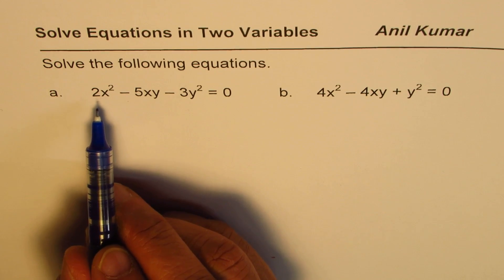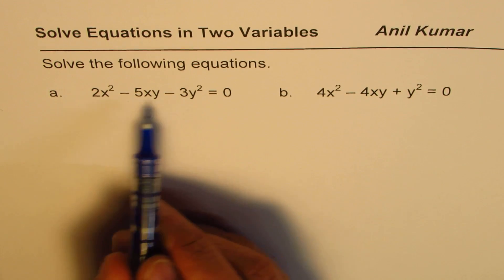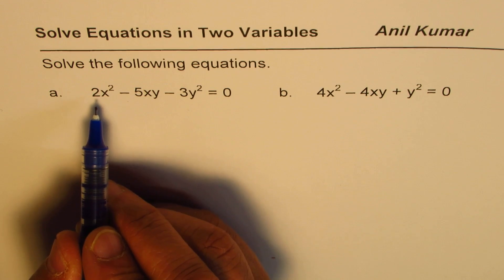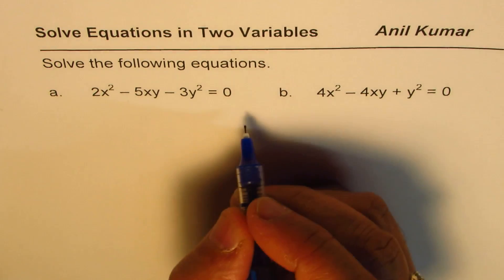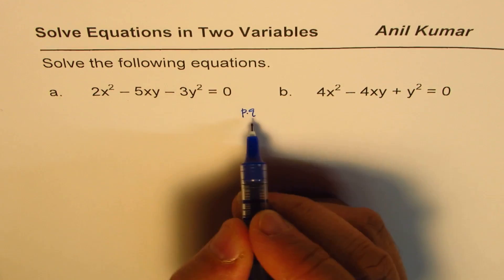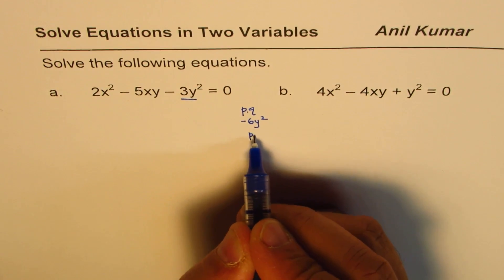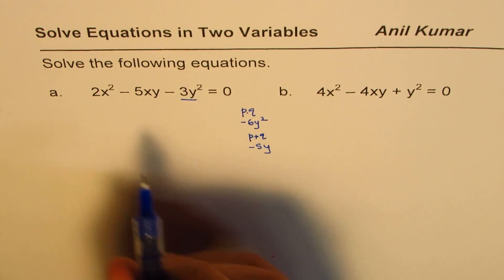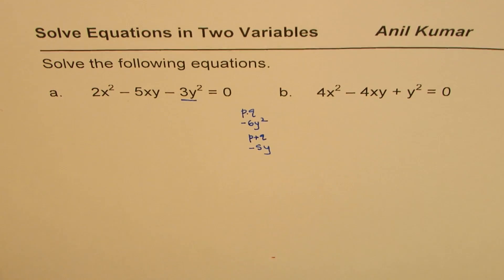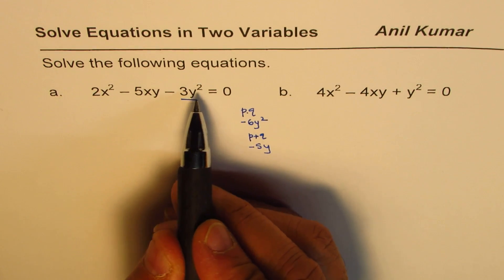So the first one, 2x squared minus 5xy minus 3y squared. We are looking for product of 2 times 3y squared with a minus. So we want product pq as minus 6y squared, and we want the sum p plus q as the middle number minus 5y. Think as if the equation is in x, single variable. The idea is to think as if the equation is in single variable and then solve. Treat y as a constant. It helps.